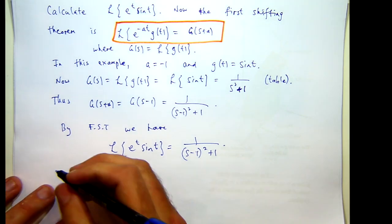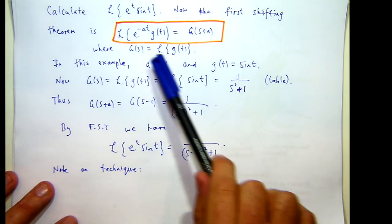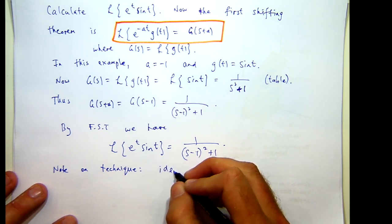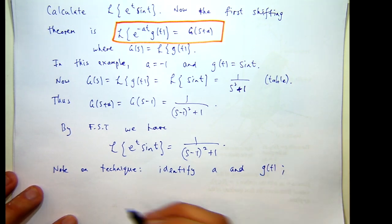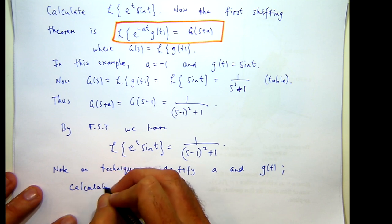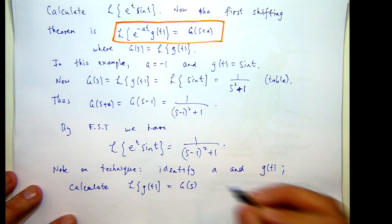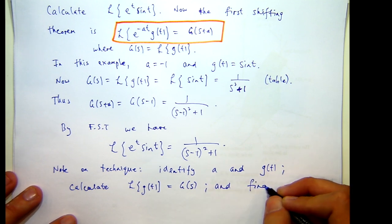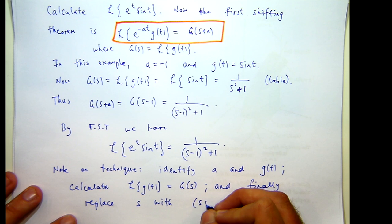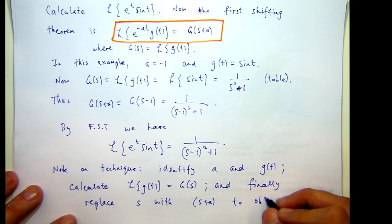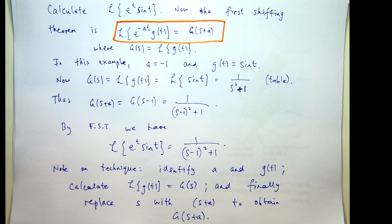Now you can see that a little note on technique, because the technique for these problems are the same, what we did was we identified a and little g, say g of t, then we calculated the transform, and then finally replace s with s plus a to obtain G(s + a). That's where we apply the first shifting theorem.